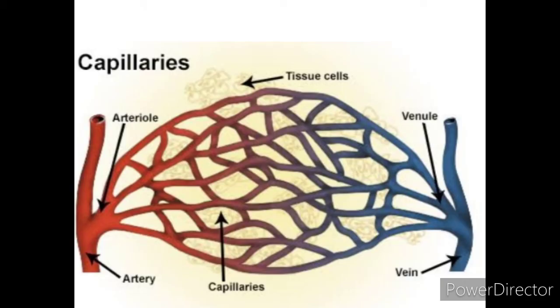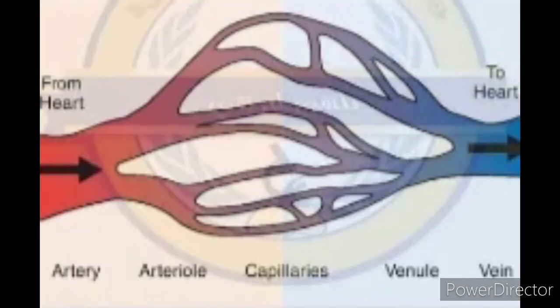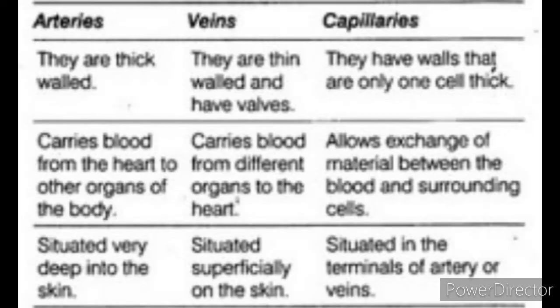The third type is capillaries. Capillaries are one-celled, thin-walled, narrow blood vessels which occur at the ends or terminals of arteries and veins. They join the arteries and veins together and form a vast network of vessels. The walls of capillaries are permeable to water and dissolved substances, so that the exchange of materials between the blood and body cells takes place through the process called simple diffusion.